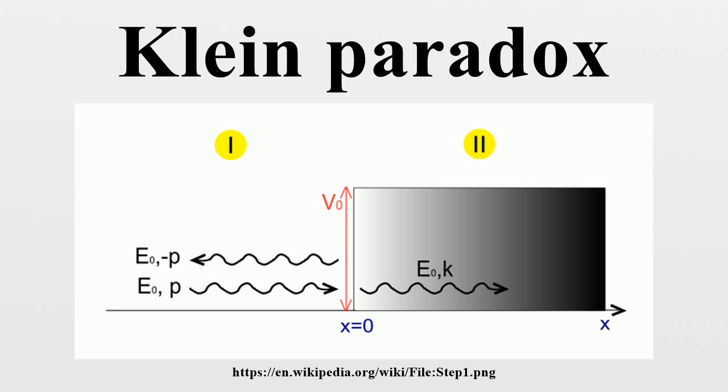Assuming the particle is propagating from the left, we obtain two solutions, one before the step in region I and one under the potential in region II, where the coefficients a, a' and b are complex numbers. Both the incoming and transmitted wave functions are associated with positive group velocity,